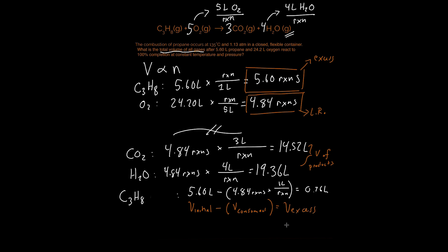And so if I wanted to get to the actual answer, the total volume of all gases, I'm just going to add everything up. So the volume total is going to be equal to the 14.52 liters plus the 19.36 liters. And then the important amount of excess that we want to quantify, which is the 0.76 liters. And all those together are going to be equal to 34.64 liters. And that is our final answer.